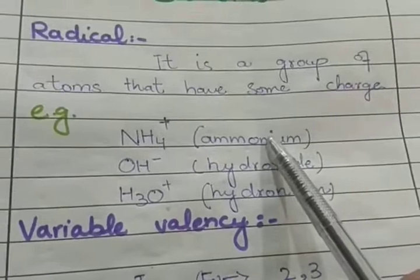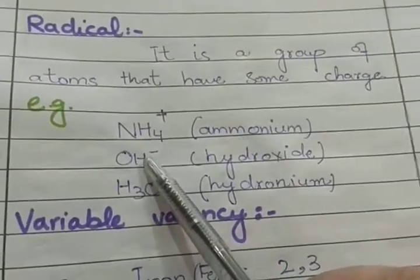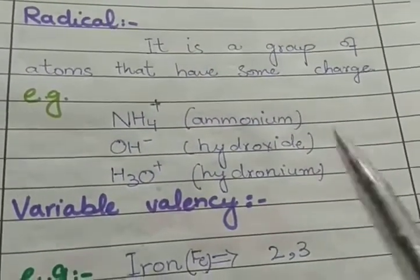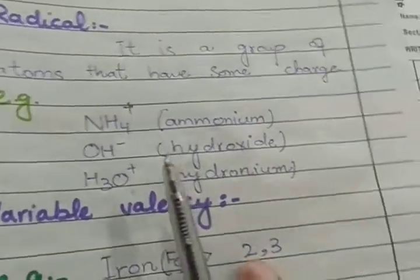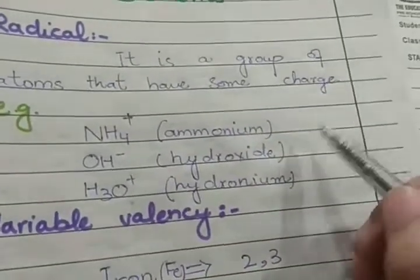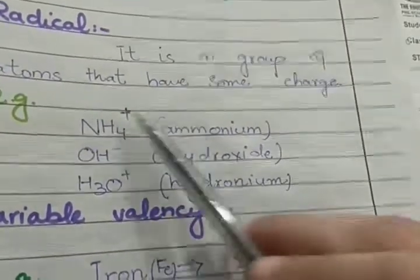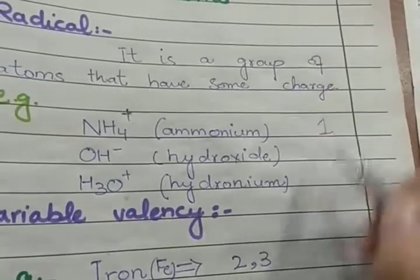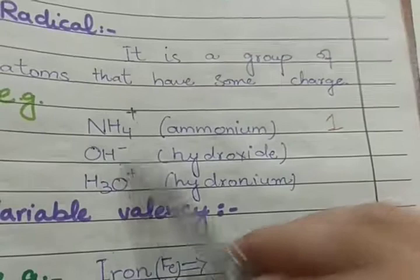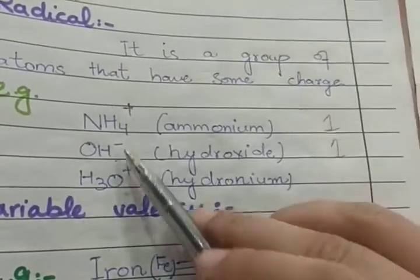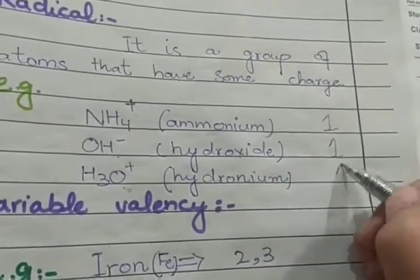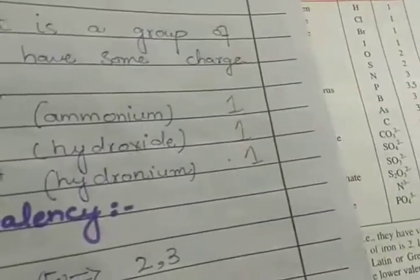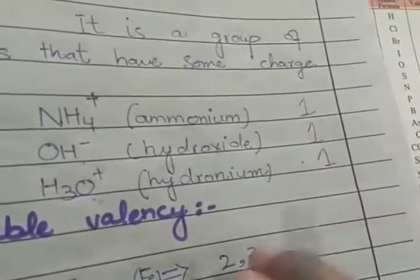So what is it? Ammonium. Other examples of radicals: OH negative ion, which we call hydroxide. H3O plus is hydronium. Now, radicals and valency - it is very easy. If you have a formula, look, it has plus charge. What is it? Plus one. It means the valency is one. OH negative - what is the valency? One. H3O - what is the valency? One. How much charge it has will be its valency.